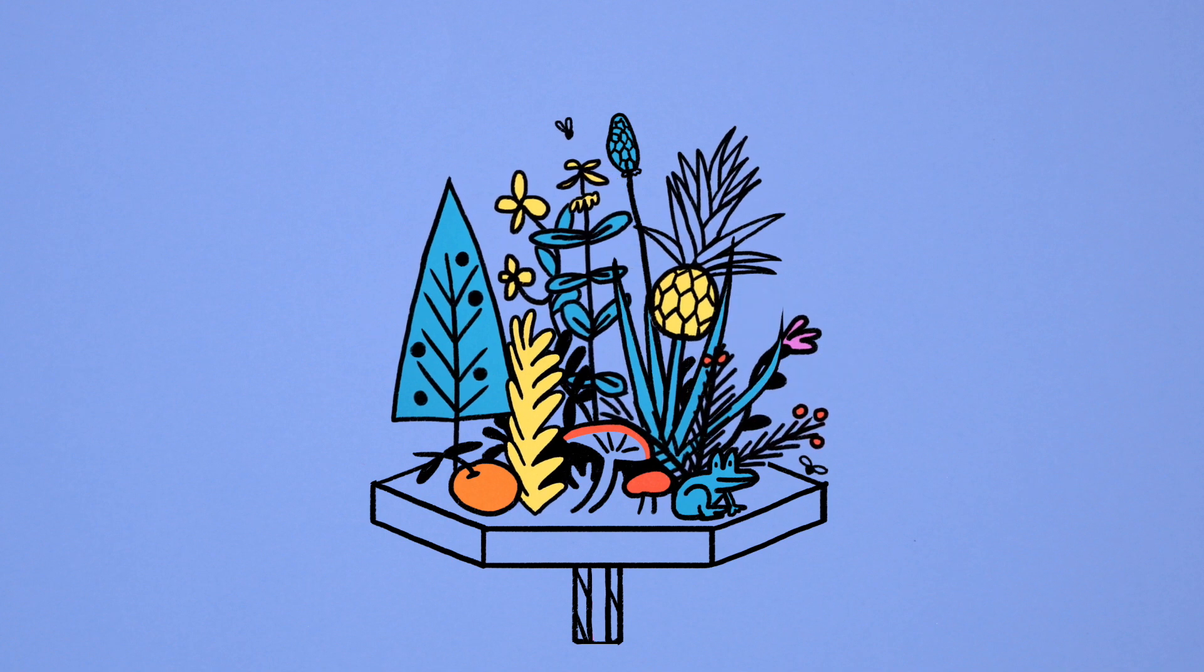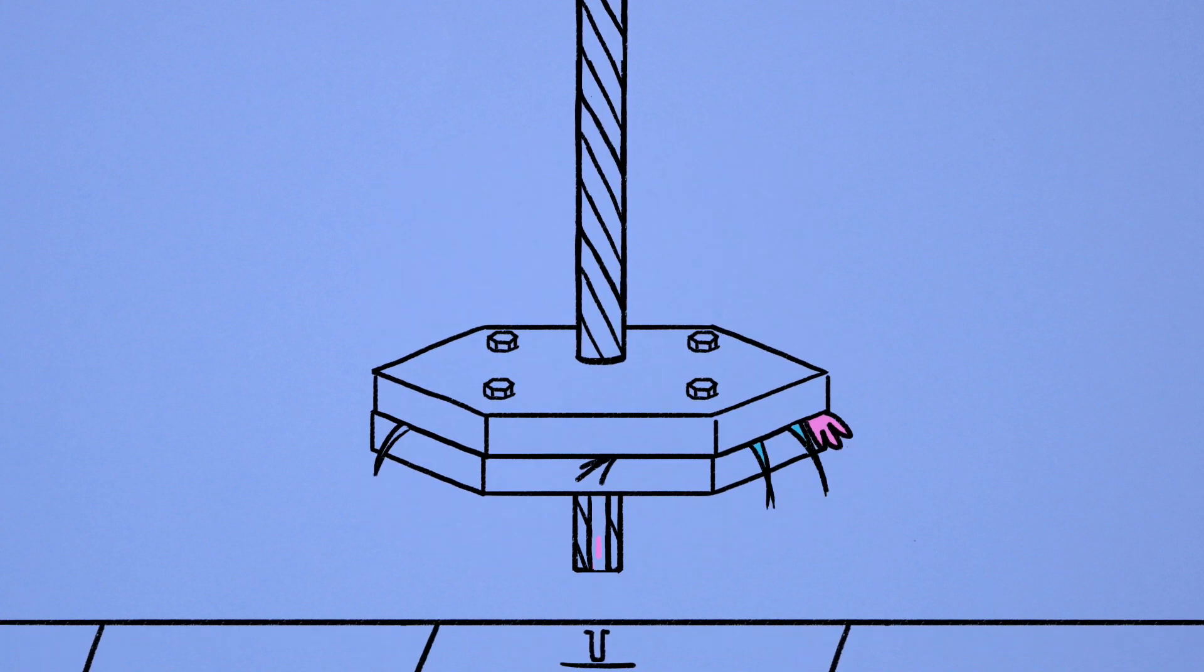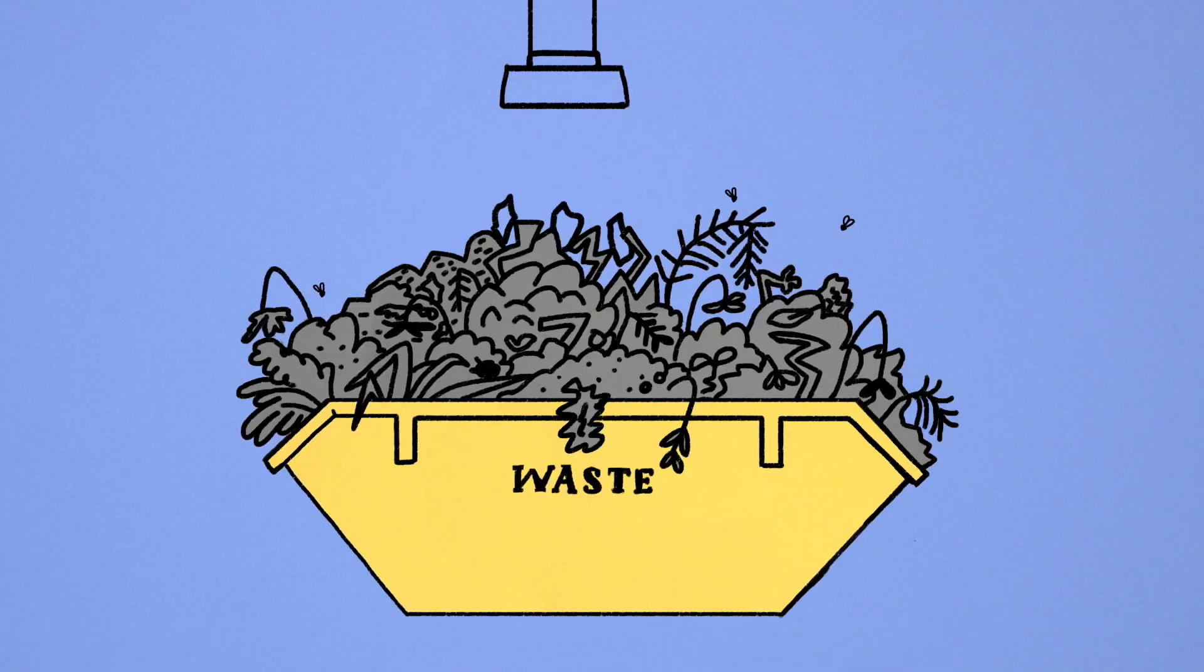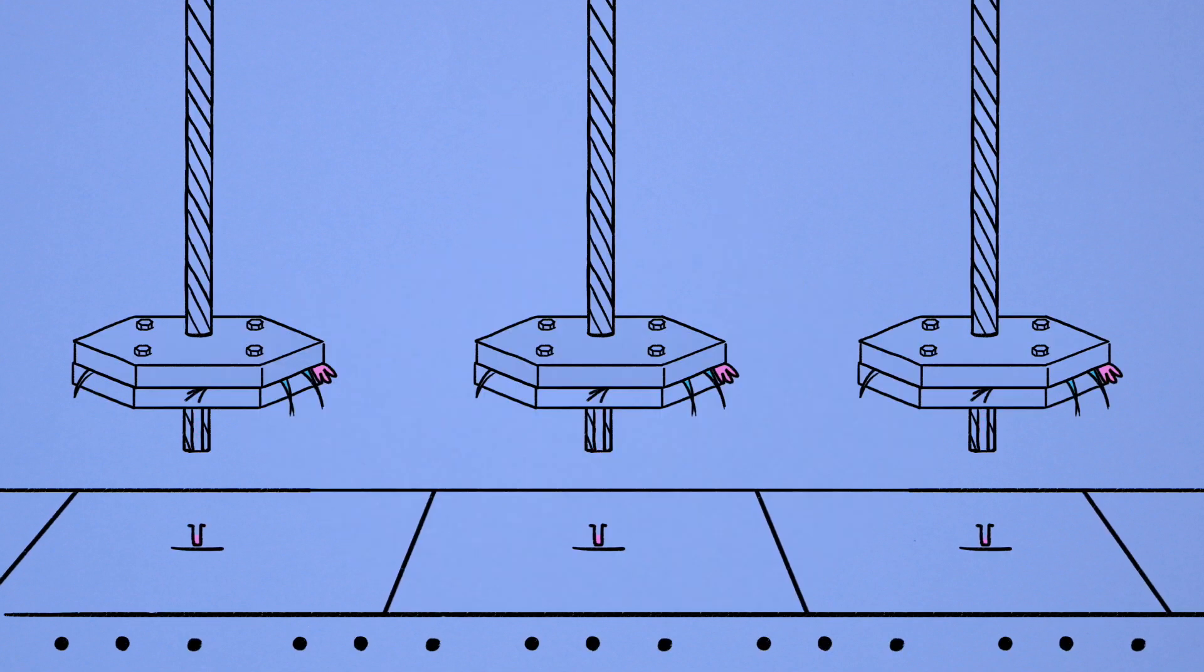But because the natural world usually produces these chemicals in tiny quantities, it would take a lot of nature and make a lot of waste to produce them naturally on an industrial scale.